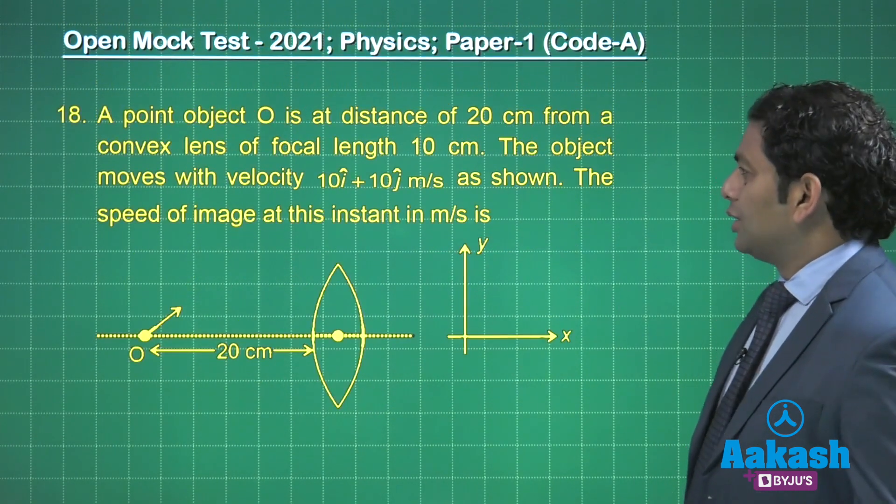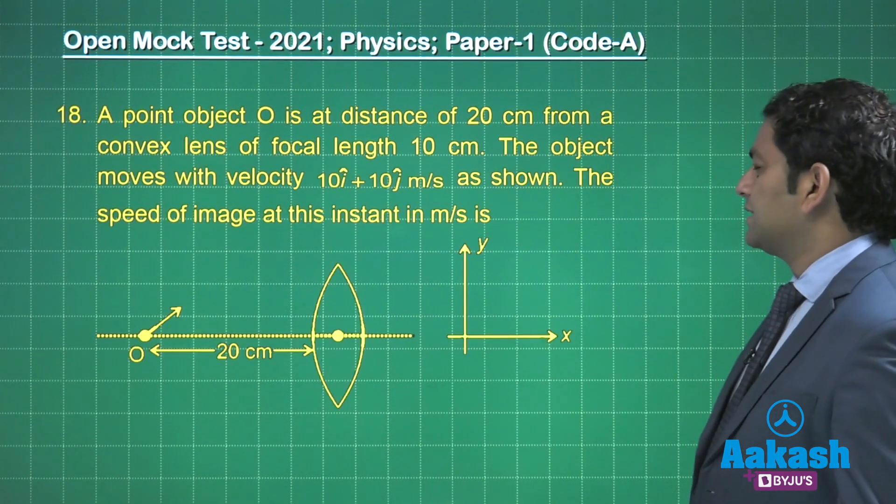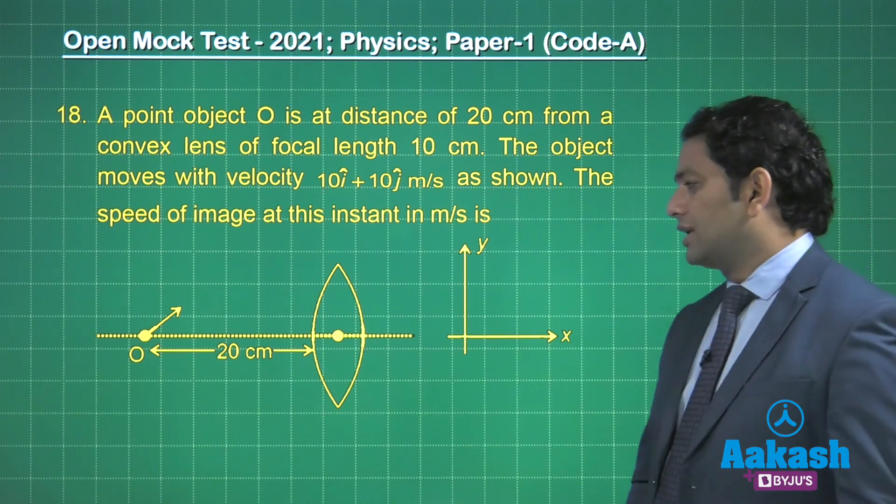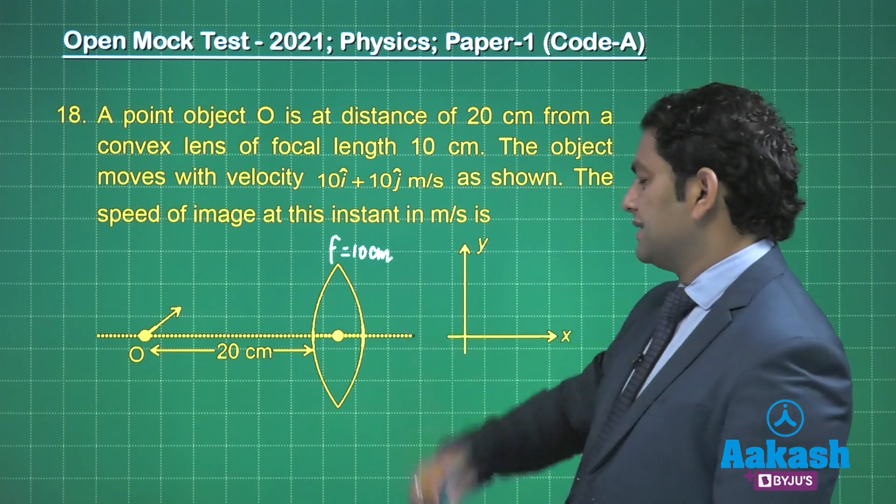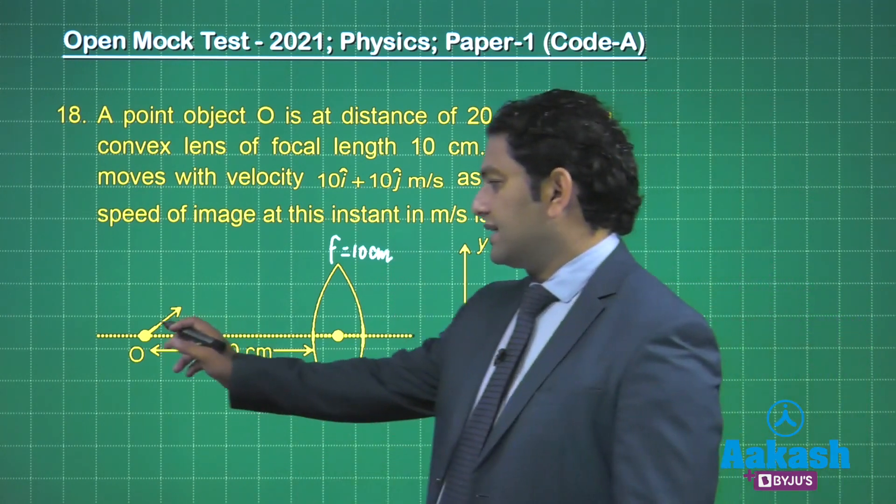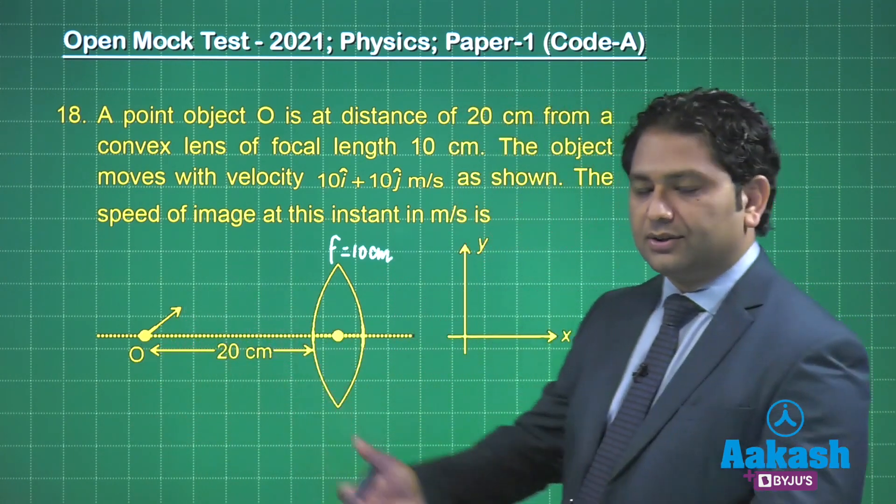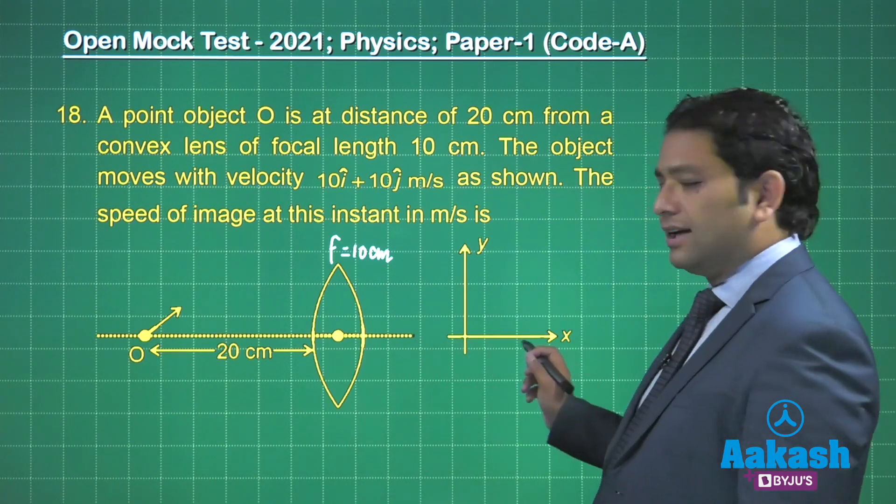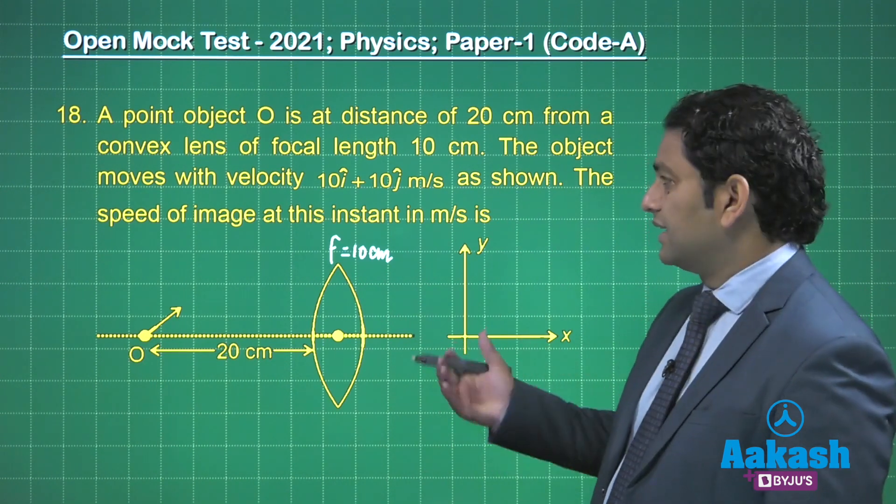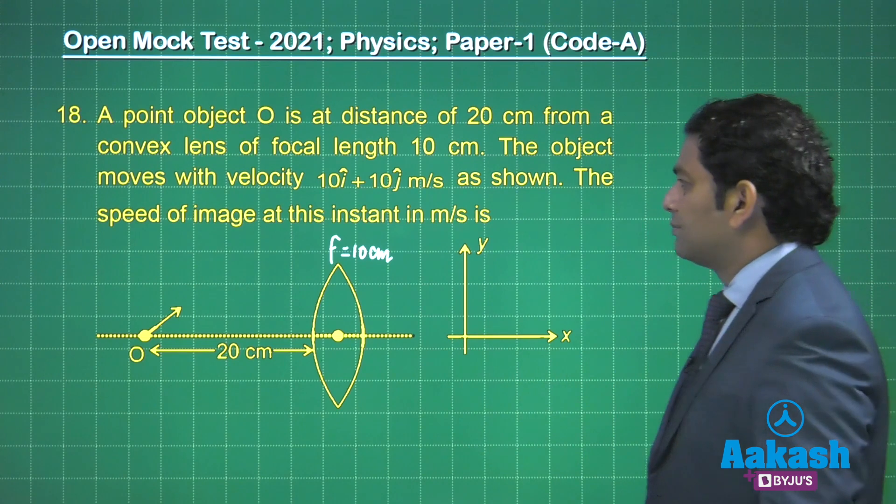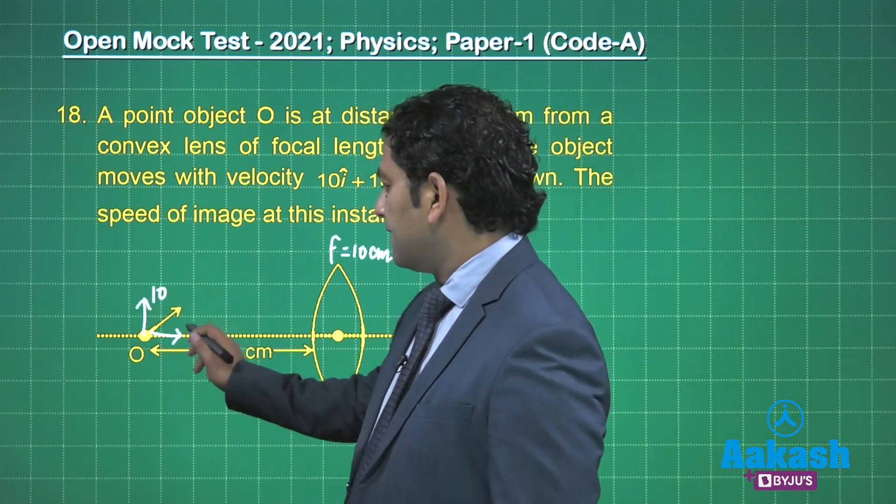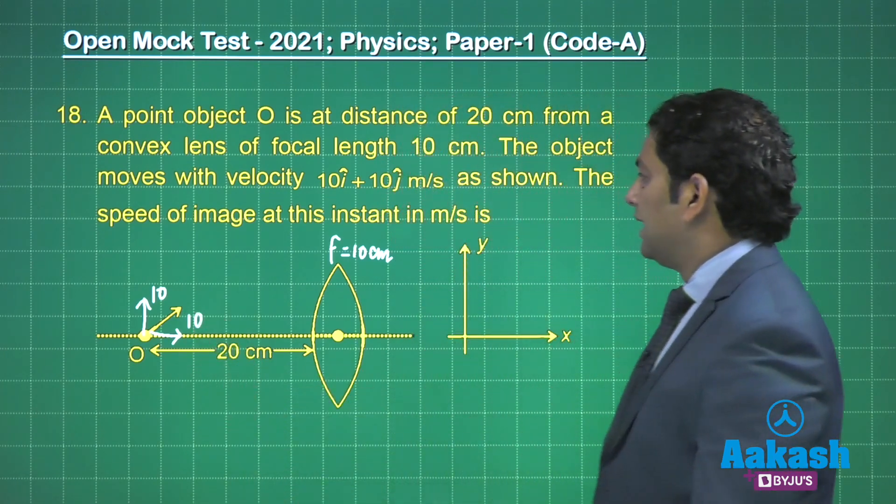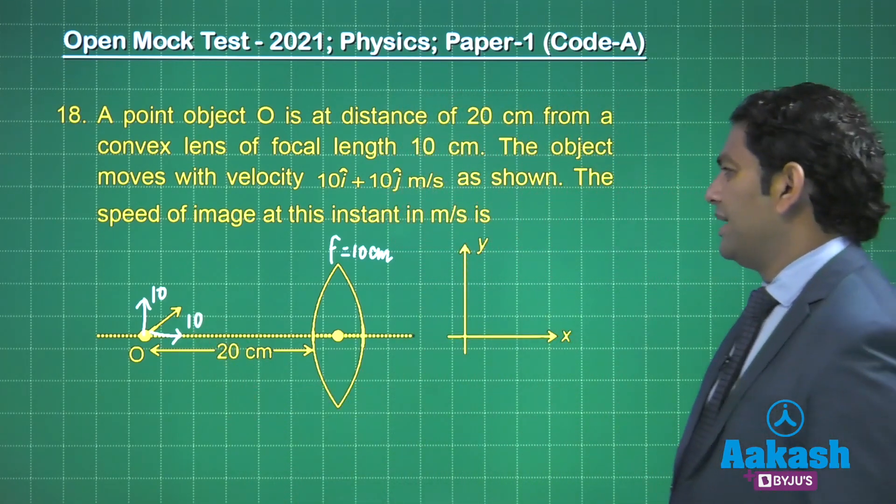A point object O is at a distance of 20 centimeter from a convex lens of focal length 10 centimeter. So it clearly says that the object is at 2f. So the image, this side, it will be at 2f, isn't it? That's very clearly known. The object moves with a velocity 10î + 10ĵ. That's the case. And I need to calculate the speed of image at this instant.